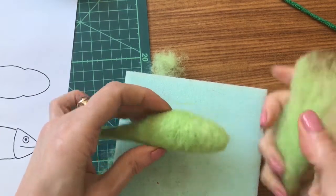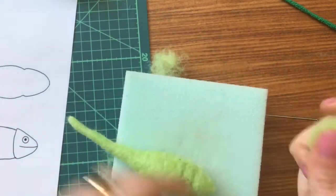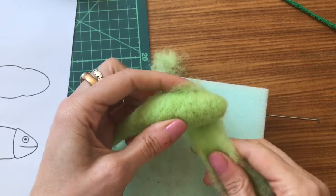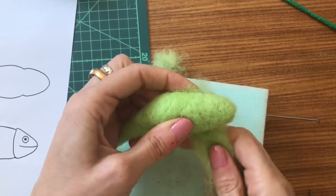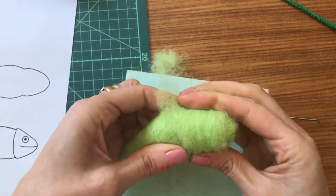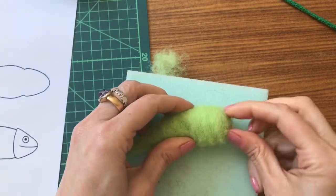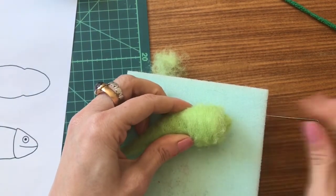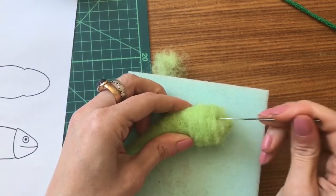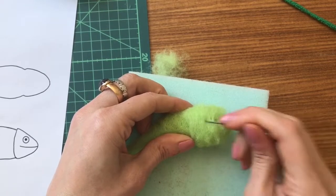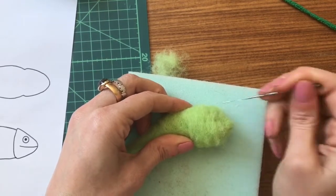Wrapping more wool now just around the top of the head onto the body area. Just a little bit more, leaving the nose area thin. Even felting that all in.